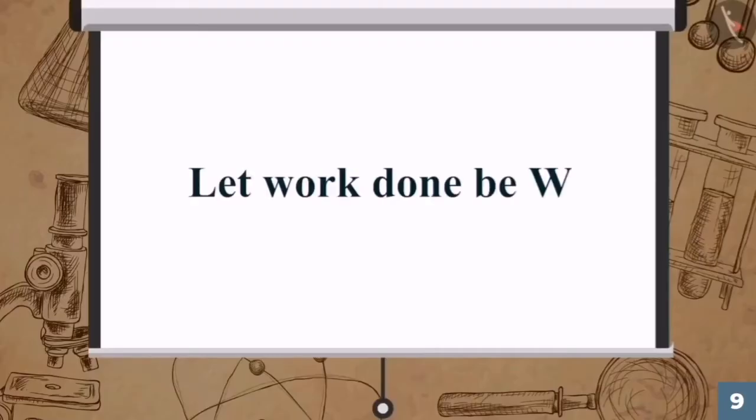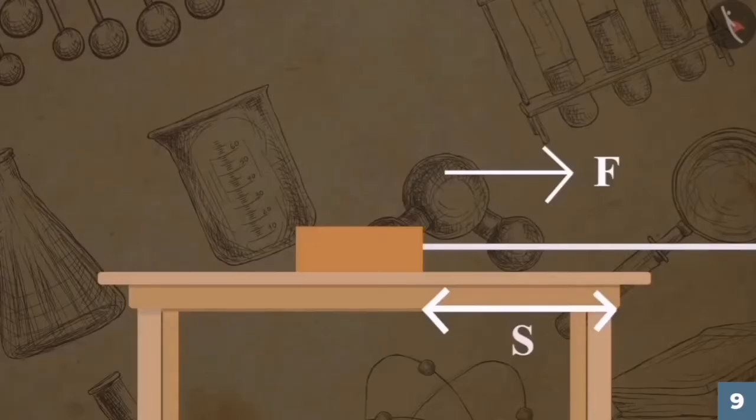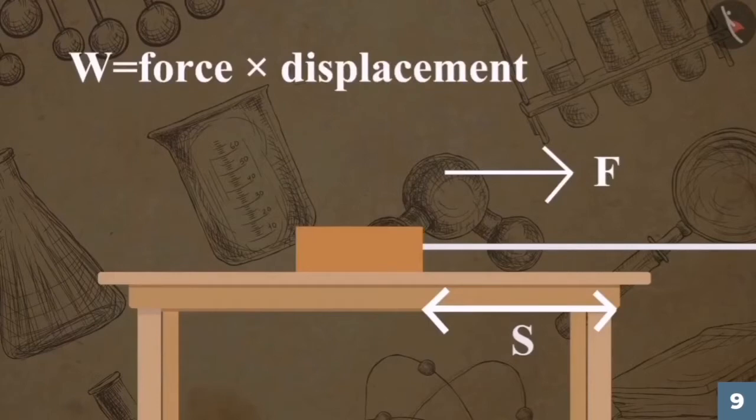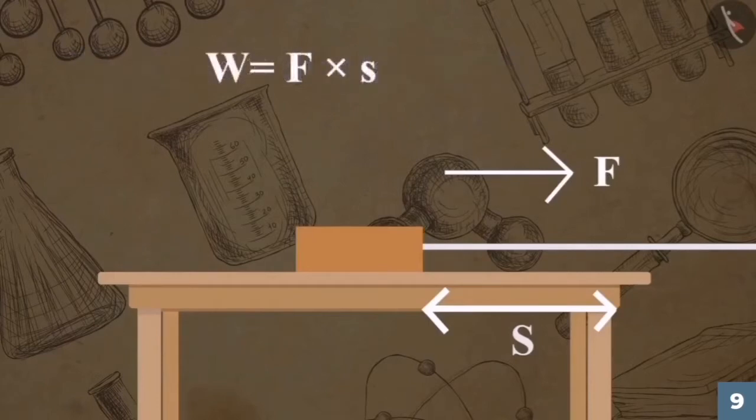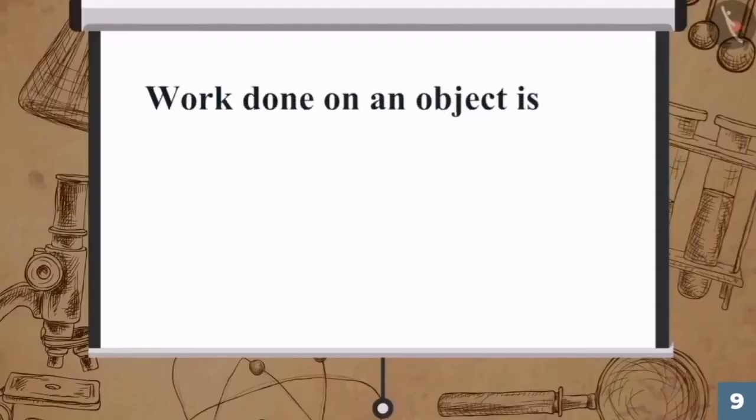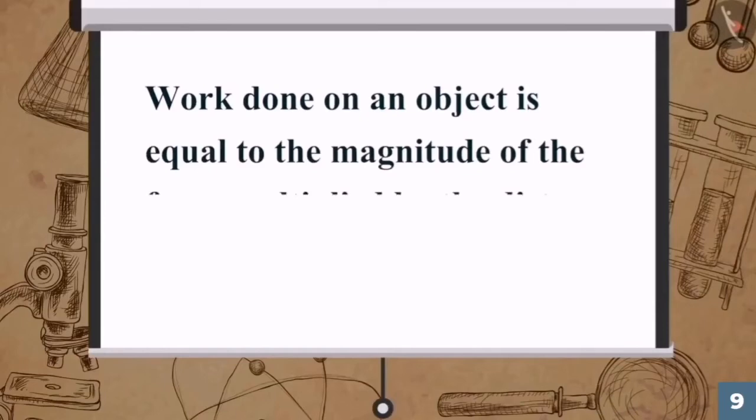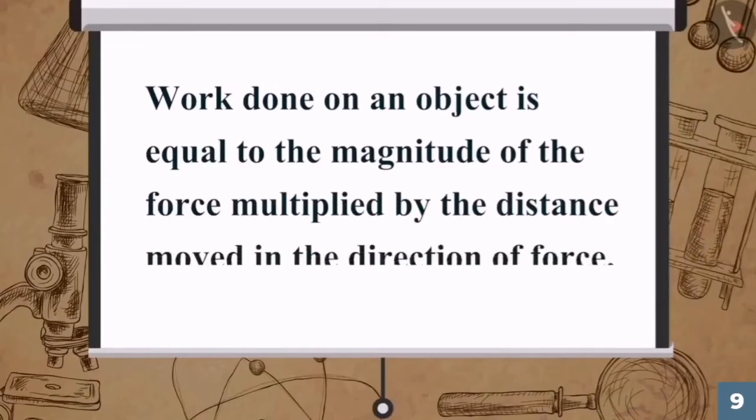Let the work done here be W. Here, work done W equals force multiplied by displacement, which is equal to F multiplied by S. Therefore, work done on an object equals the magnitude of the force multiplied by the distance moved in the direction of force.